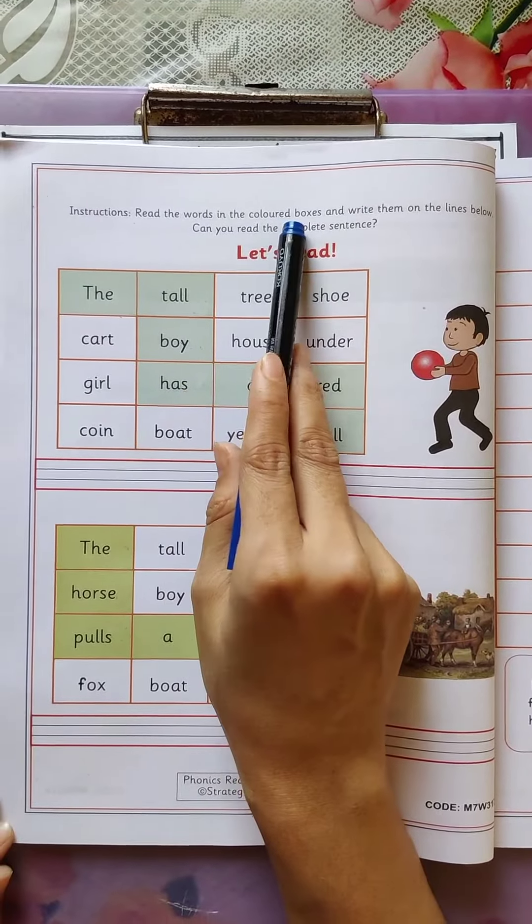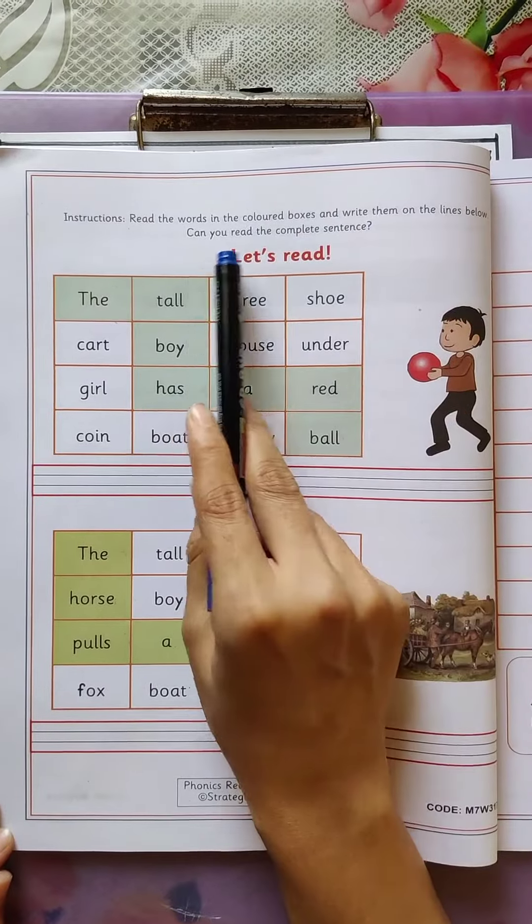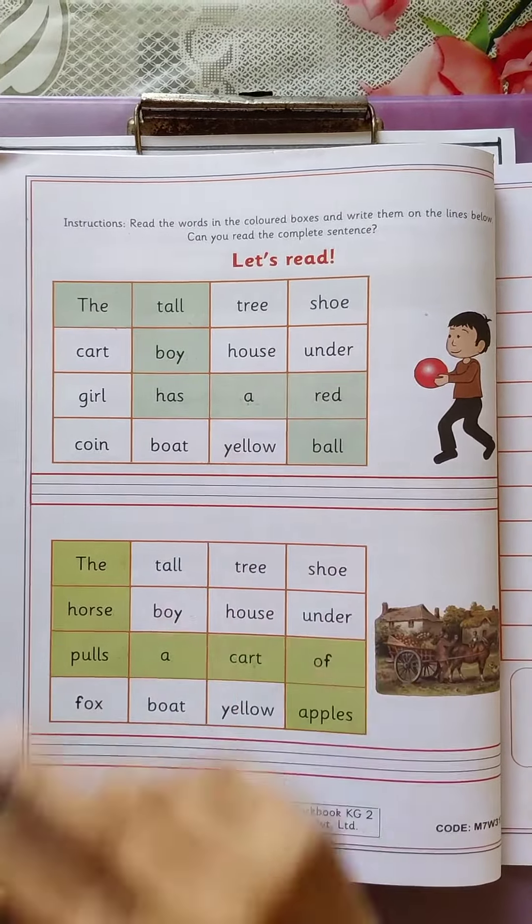Read the words in the colored boxes and write them on the lines below. Can you read the complete sentence? Let's read.